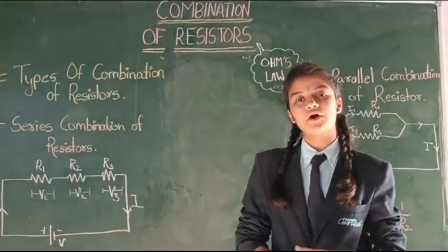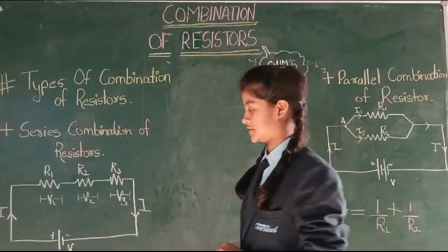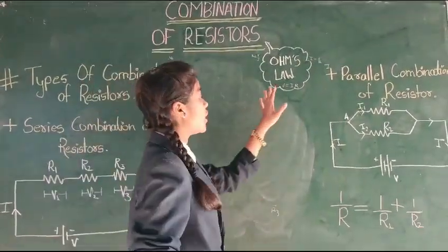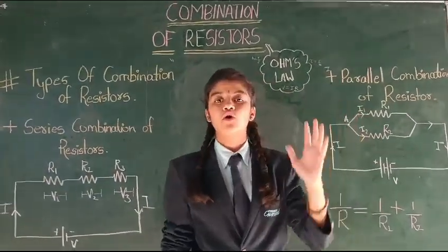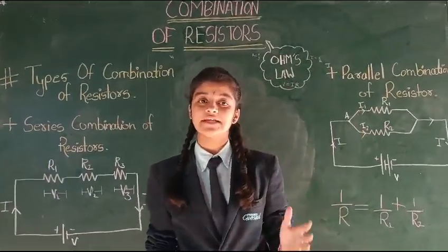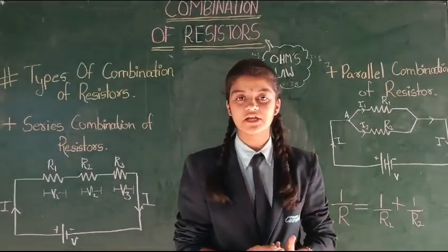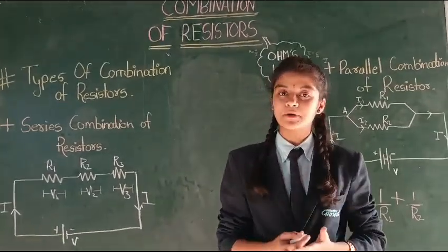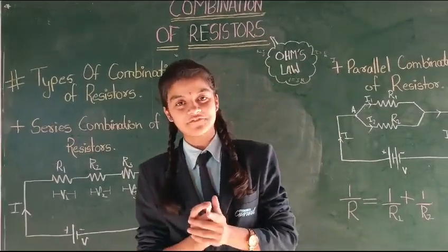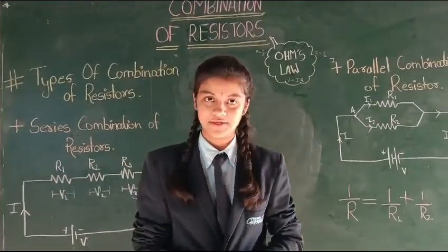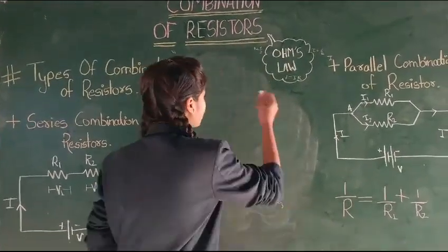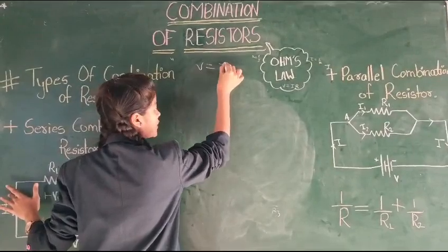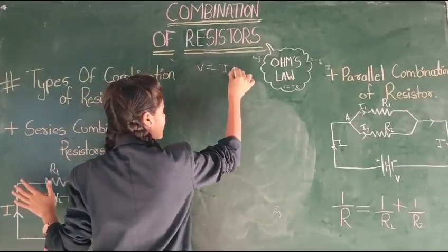Let us derive the formula for series combination of resistors. As we know Ohm's law — Ohm's law states that at constant temperature, the current flowing through the conductor is directly proportional to the potential difference across its ends. So, for Ohm's law, it is given that V equals to I into R.